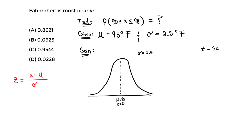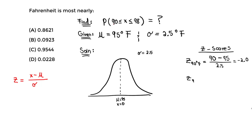For Z at 90 degrees Fahrenheit: plug in X = 90, minus mu = 95, divided by standard deviation = 2.5. That gives us negative 2.0 — keep that negative. For Z at 98 degrees Fahrenheit: 98 minus 95, divided by 2.5. You should get 1.2. So we have the two Z-scores and we plot them.